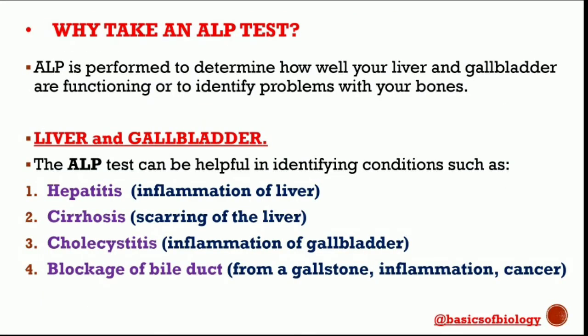Why should a person take an alkaline phosphatase level test? An alkaline phosphatase test may be performed to determine how well your liver and gallbladder are functioning, or to identify problems with your bones. Checking alkaline phosphatase levels in the blood is a routine part of liver function and gallbladder tests. Symptoms such as jaundice, abdominal pain, nausea, and vomiting may lead your doctor to suspect something is wrong with your liver or gallbladder.